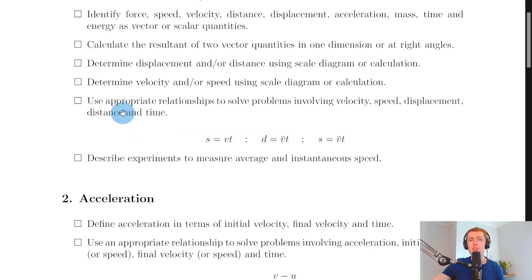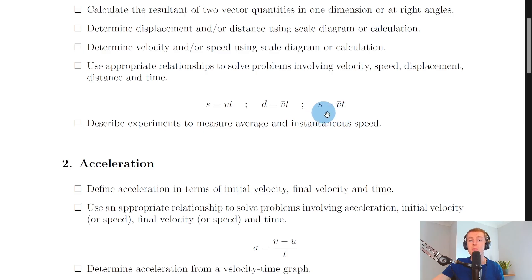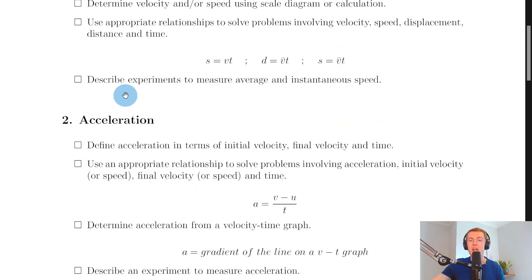You need to use appropriate relationships to solve problems involving velocity, speed, displacement, distance and time. So we have: displacement equals velocity times time (s = vt), distance equals average speed times time (d = v̄t), and displacement equals average velocity times time (s = v̄t).